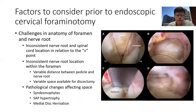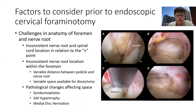There is an inconsistent nerve root location within the foramen due to pathology or the variable distance between the pedicle and the nerve roots. There is also variable space depending on the individual for the discectomy. Pathological changes affecting the space include syndesmophytes, superior articular process hypertrophy, and medial disc herniations — these can also lead to variation in the nerve root position.